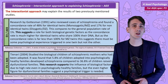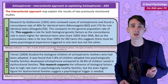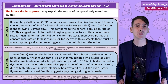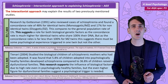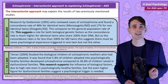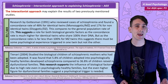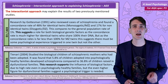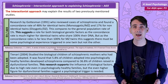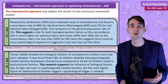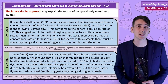The Tienari study showed higher rates of schizophrenia for the adopted children of biologically schizophrenic mothers than the 1% of the background population. But far higher rates were found in children who were adopted into psychologically dysfunctional families at 36.8%, compared to 5.9% of children adopted into psychologically healthy families. Again, this is highly suggestive of a biological diathesis that is triggered by a psychological stressor.